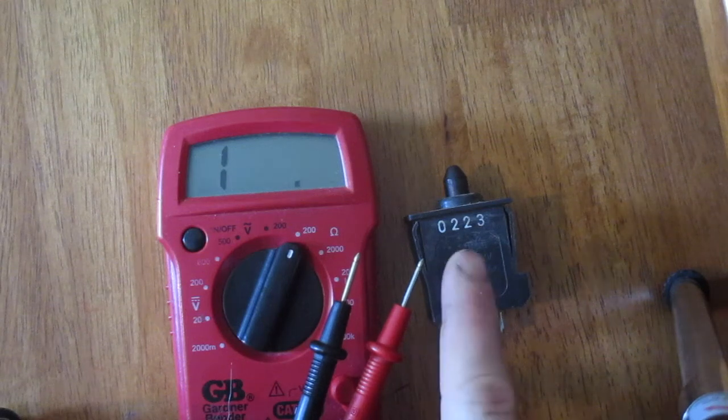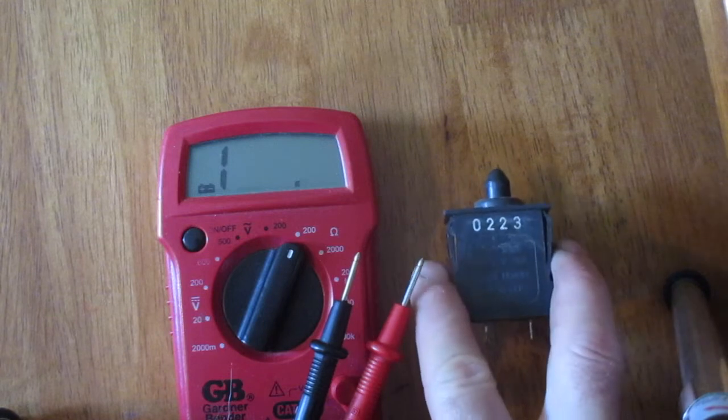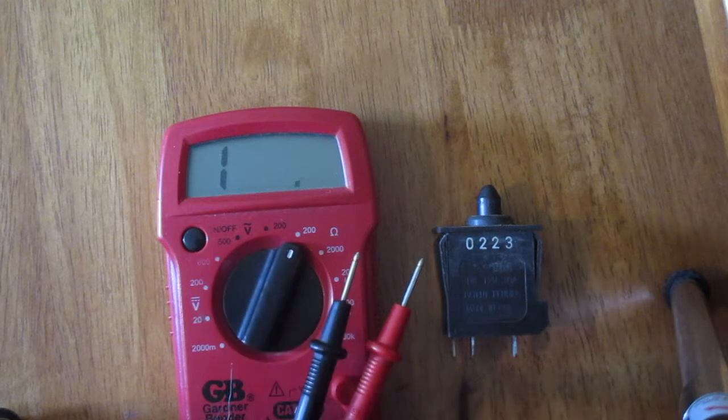In this video I'm going to show you how to test your Power Wheels accelerator or gas pedal switch. What you're going to do is turn your multimeter on and set it at 200 ohms.